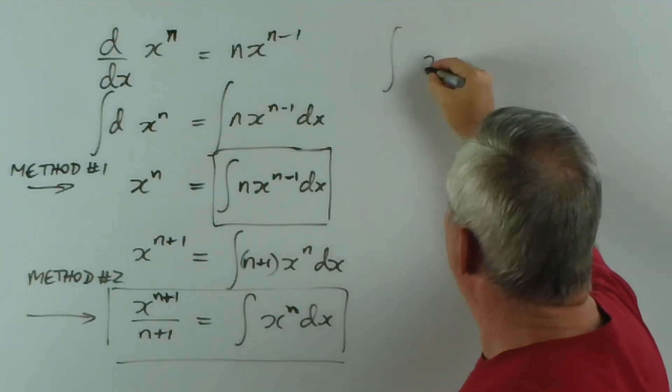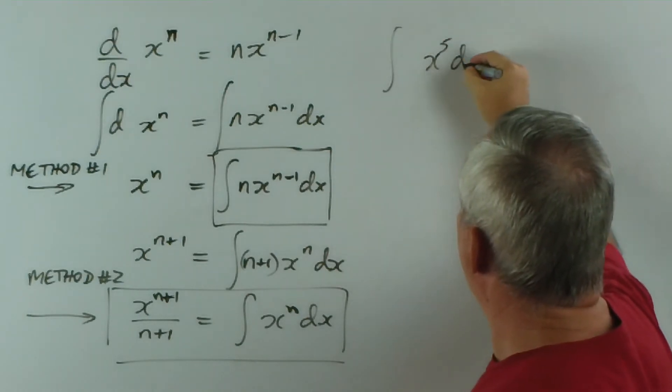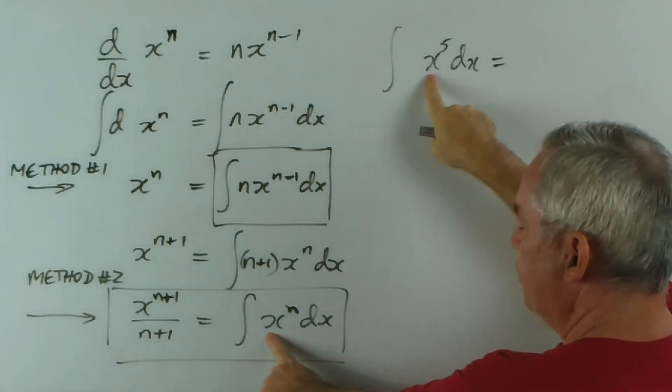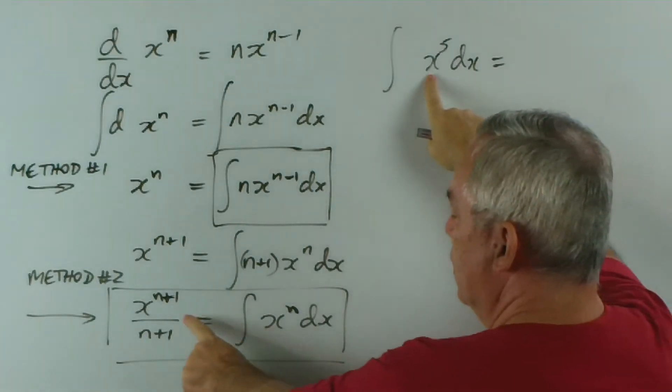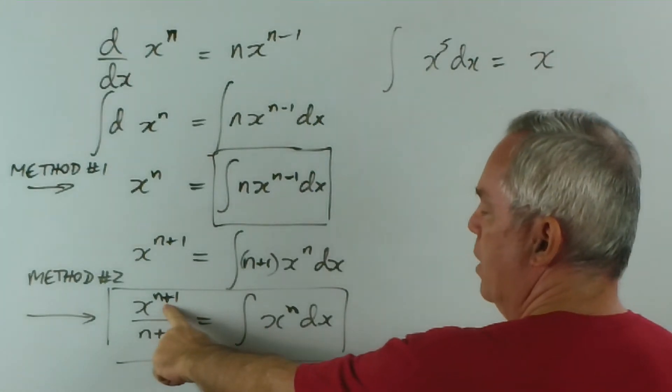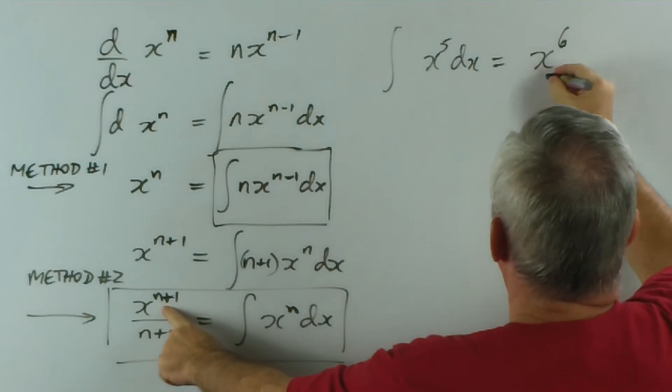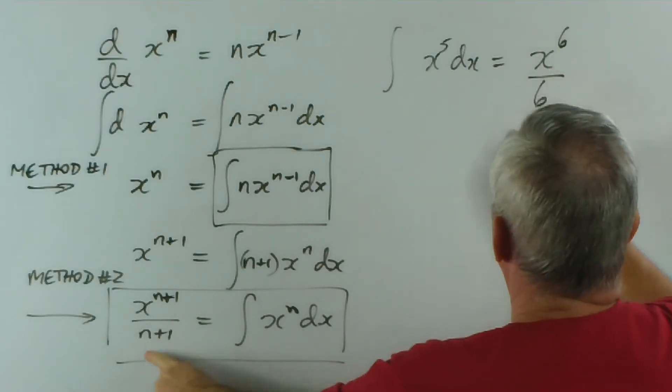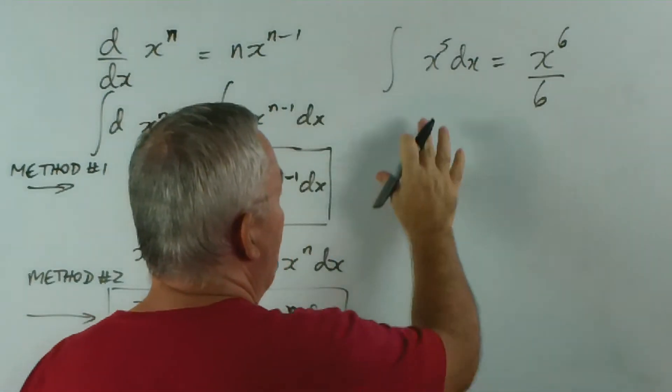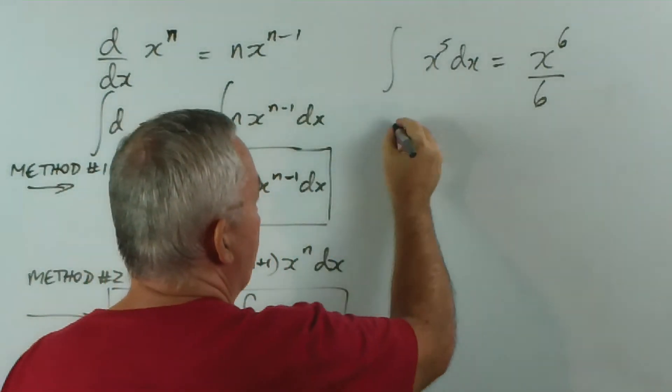For example, I think before we had something like x to the 5 dx. If we're integrating x to the 5, then we simply write down x to 1 power greater, 5 plus 1 is 6, and write it over 6. Now, this, of course, is my preferred method for polynomials and things of this sort.